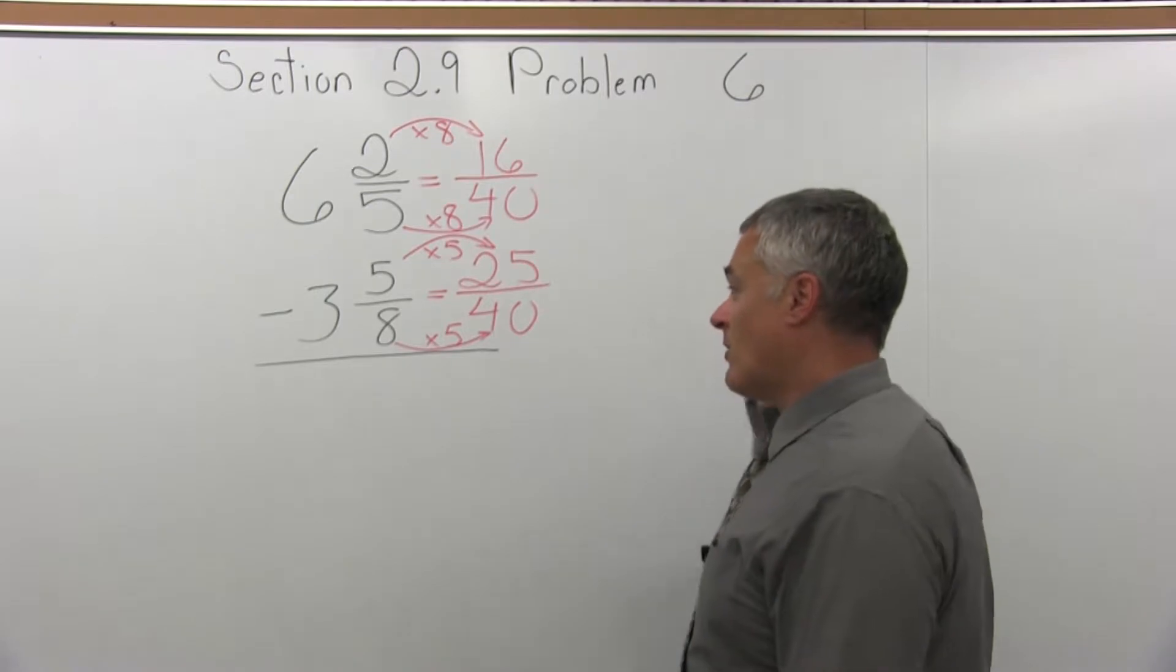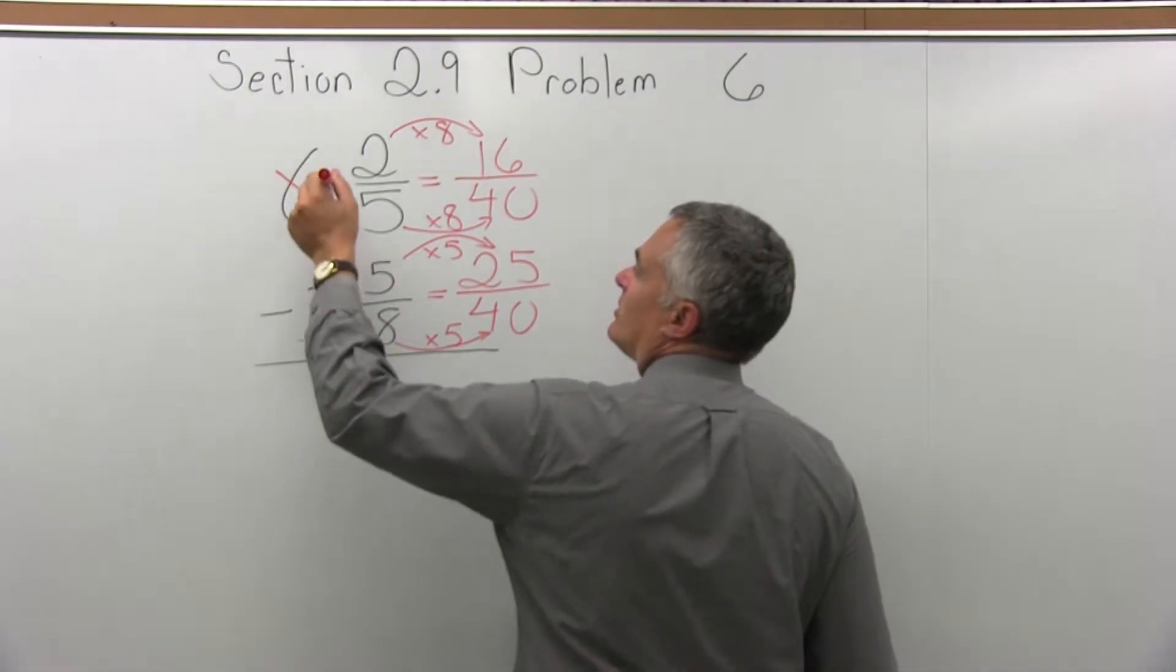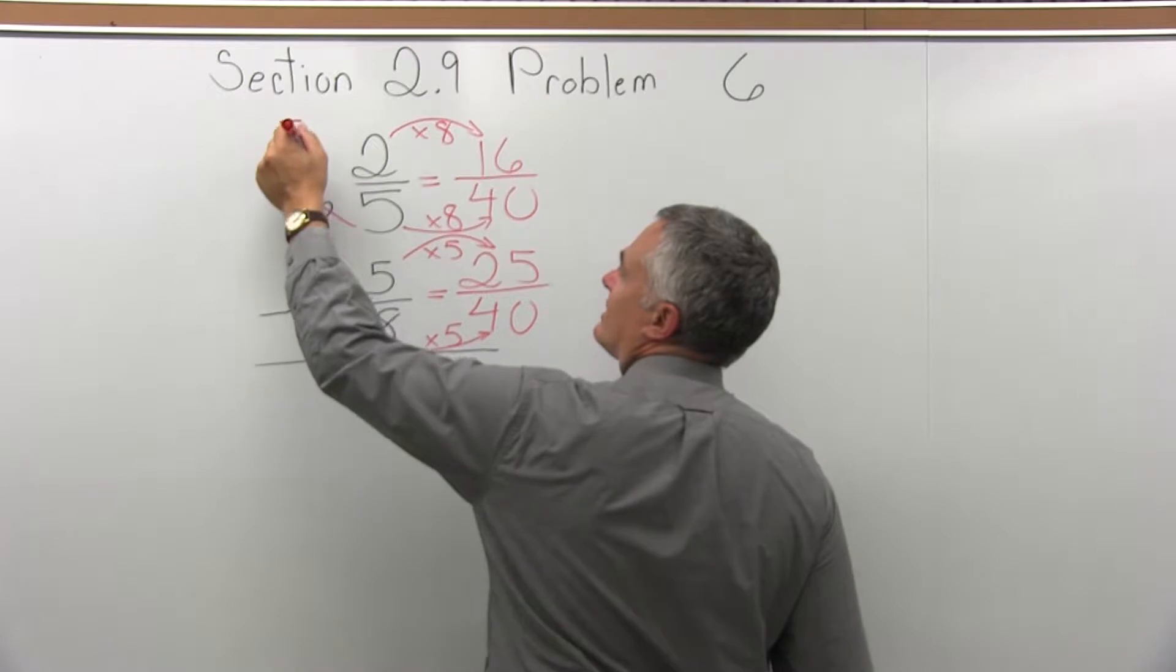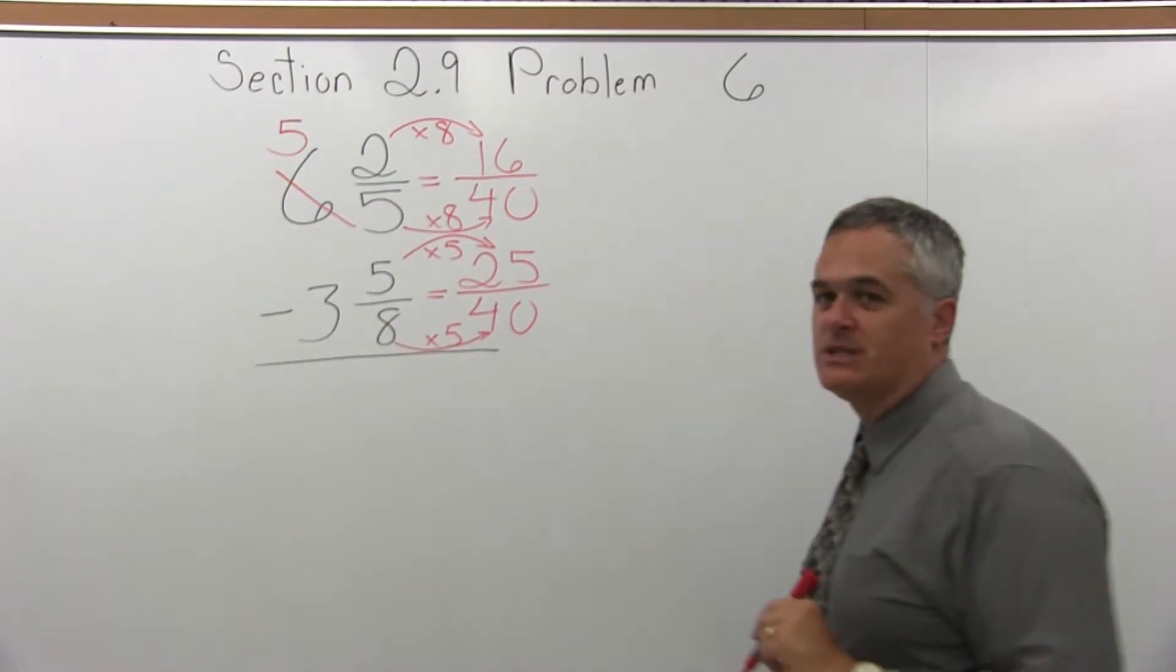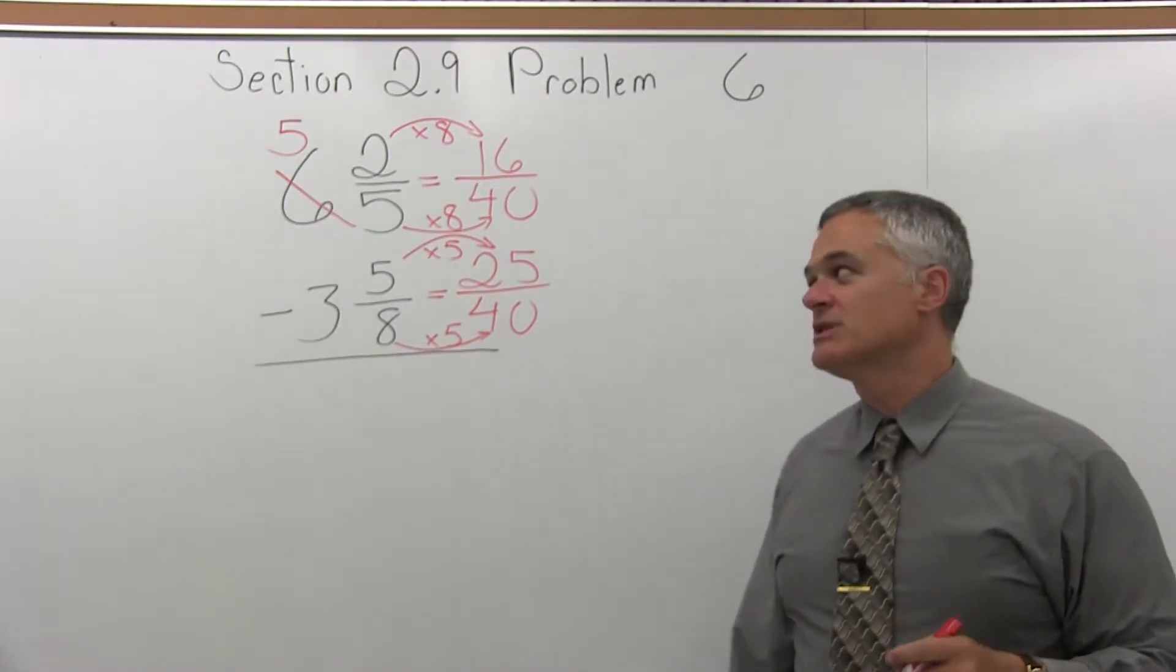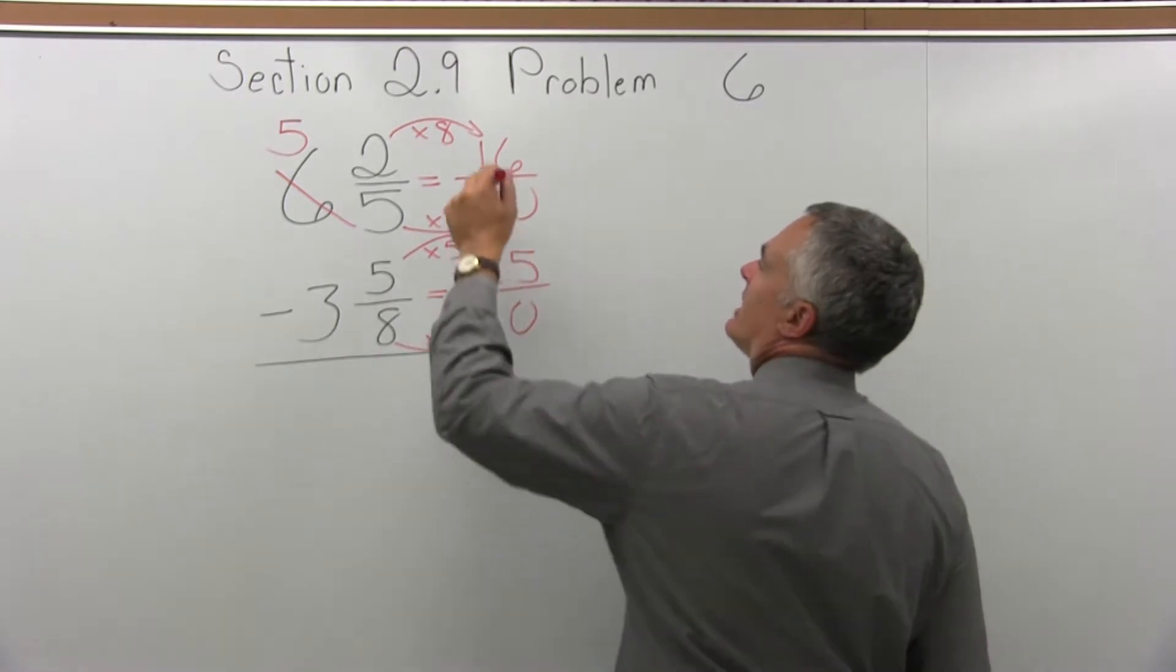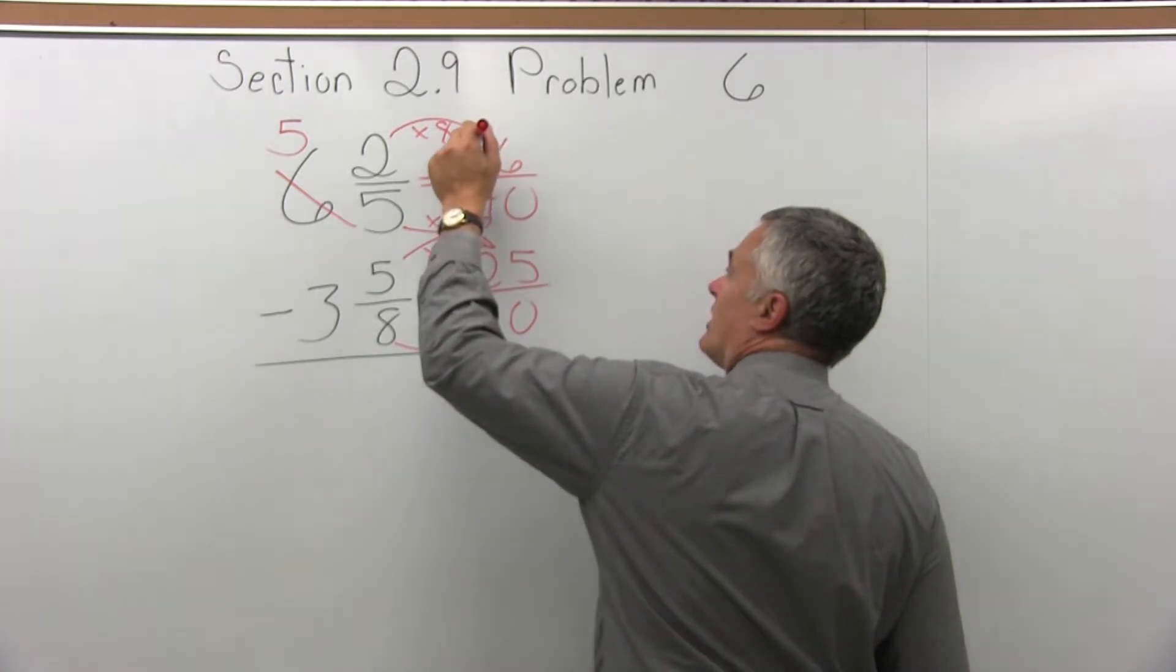So to borrow, what we have to do is go to the whole number that's in front of the upper fraction, cross it out and reduce it by 1. It was a 6, I'm going to cross out that 6, reduce it down to a 5. Then I cross off the numerator of 16.